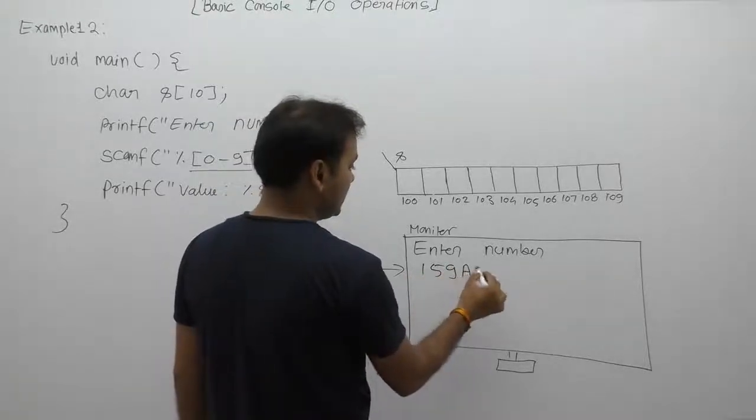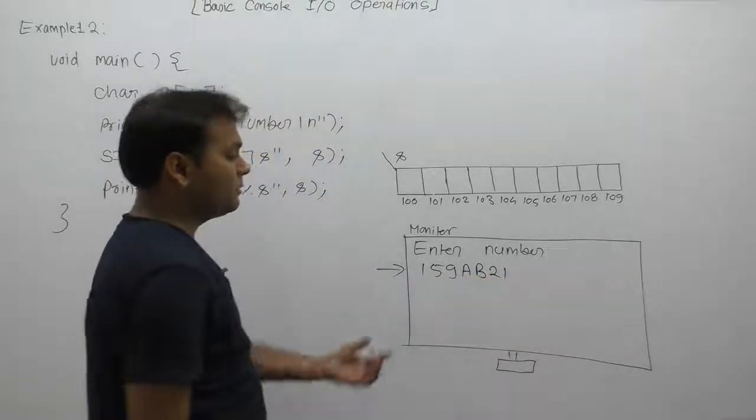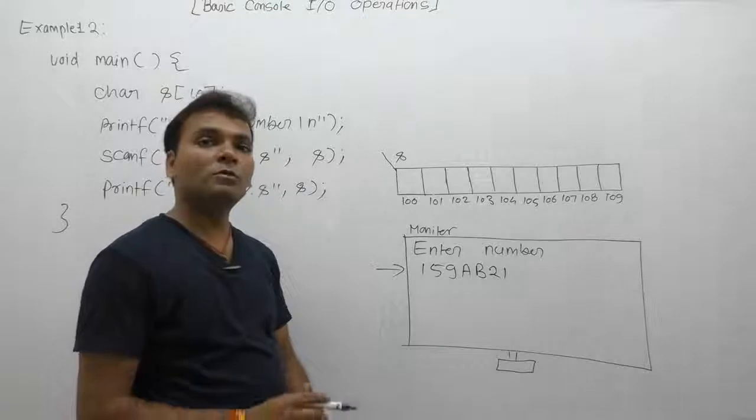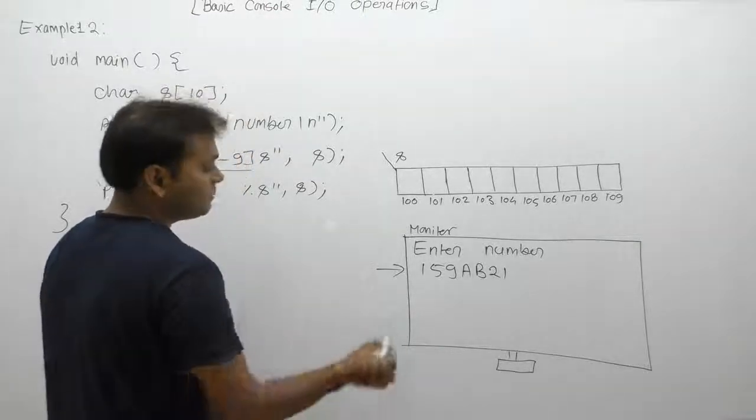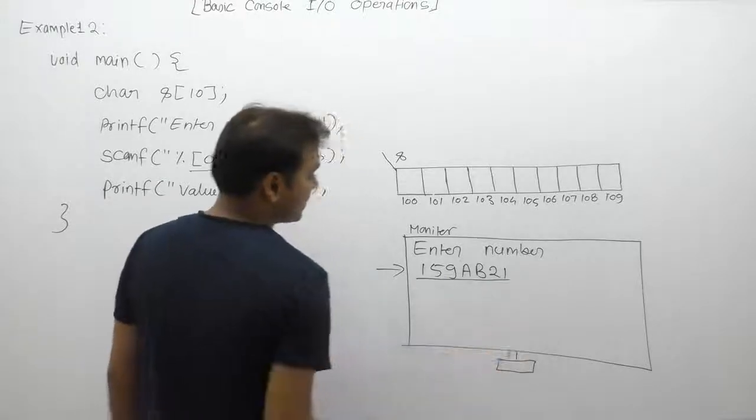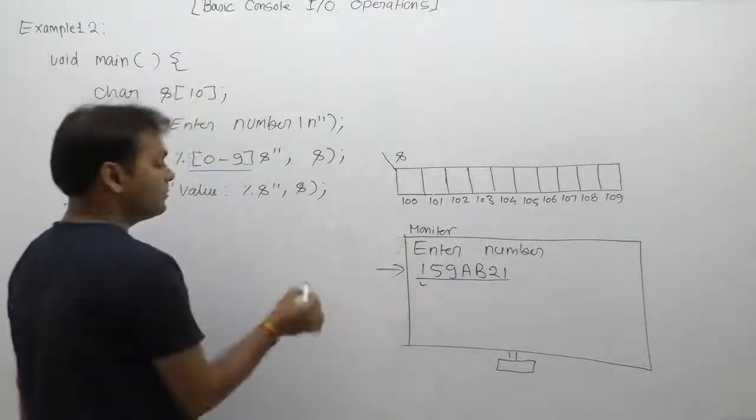In that case, we are entering a number as 159ab21. This data will be stored inside the standard input buffer. The digits will be read subsequently one by one. One is a valid symbol for the given regular expression 0 to 9 because one lies under the range, therefore it is stored inside the array.